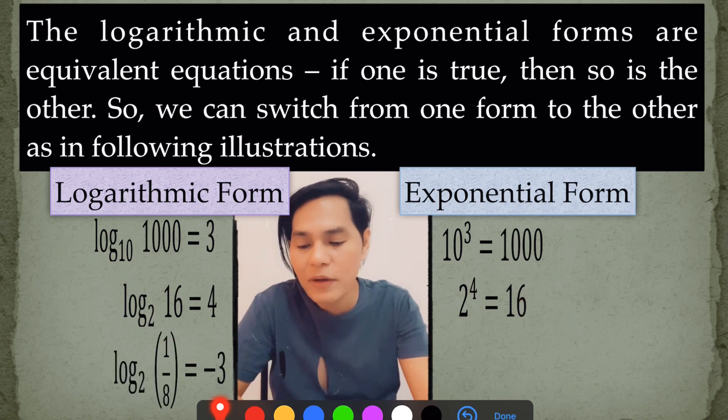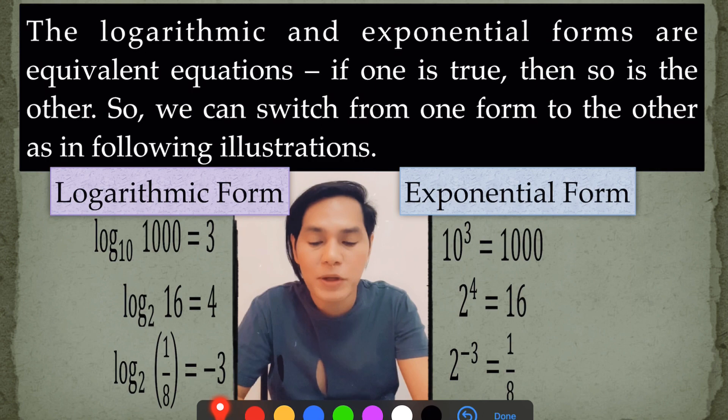Last example here. Look at this. The log of 1/8 to the base 2 is equal to negative 3. And that is equal to 2 to the power of negative 3 is equal to 1/8.